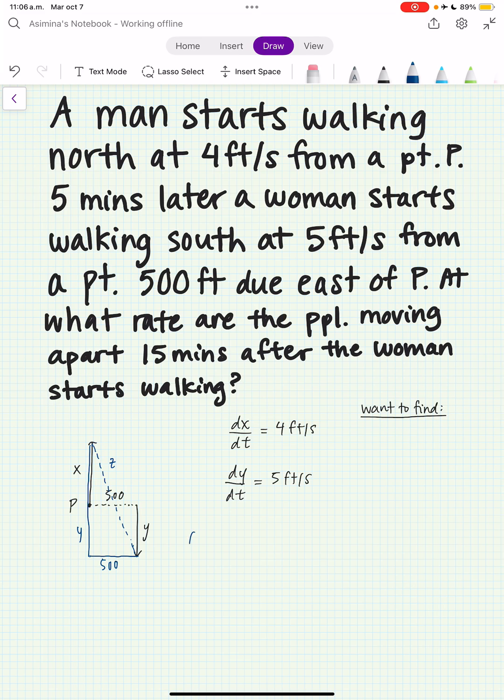Now we have the following relationship. We know that (x+y)² + 500² = z², and we're asked to find at what rate the people are moving apart 15 minutes after the woman starts walking.